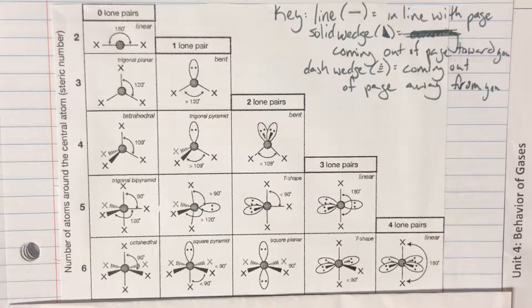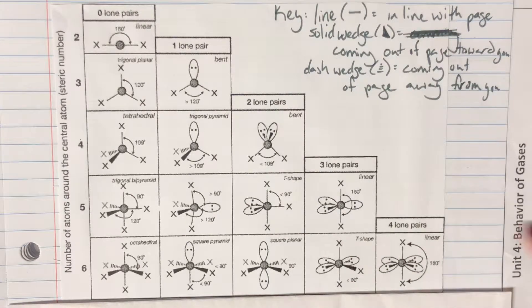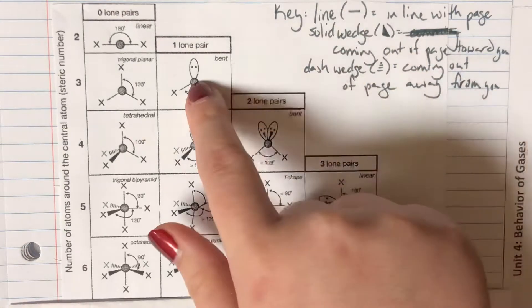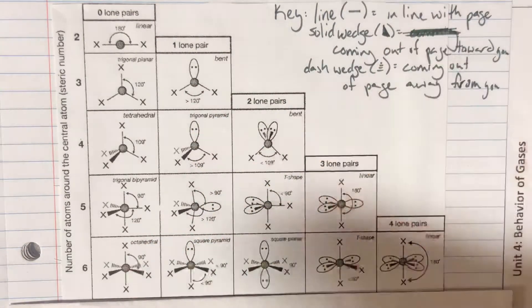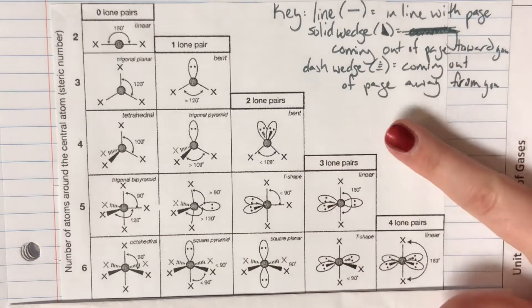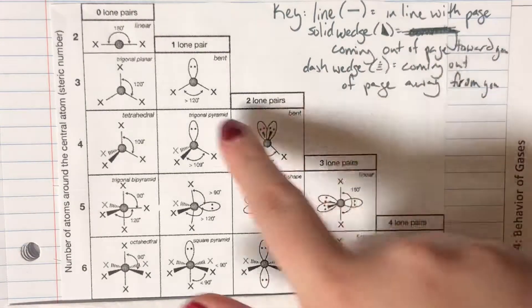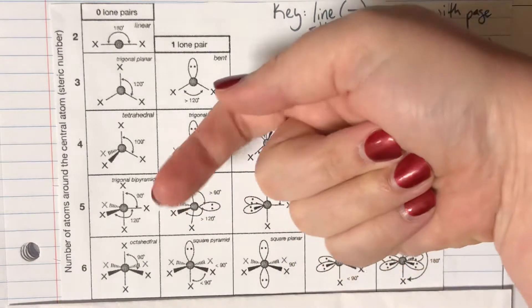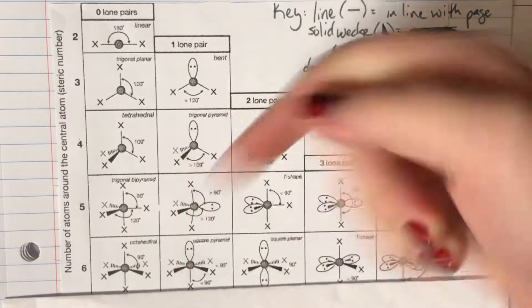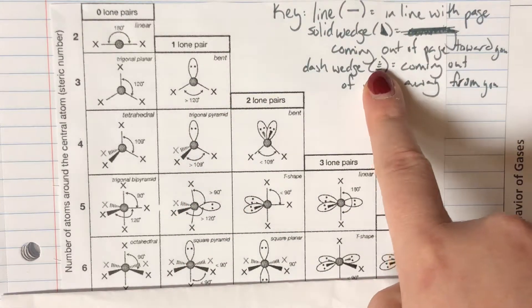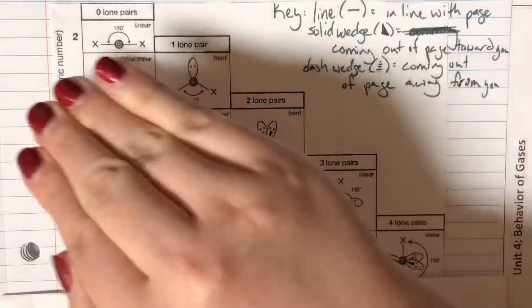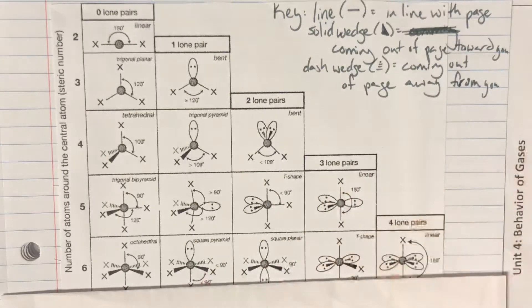The lines in here that is going to just be in line with the page, which means it's just going to be flat. A solid wedge is going to be that that image is coming out towards you, and then a dashed wedge is going to be it is going into the page away from you.